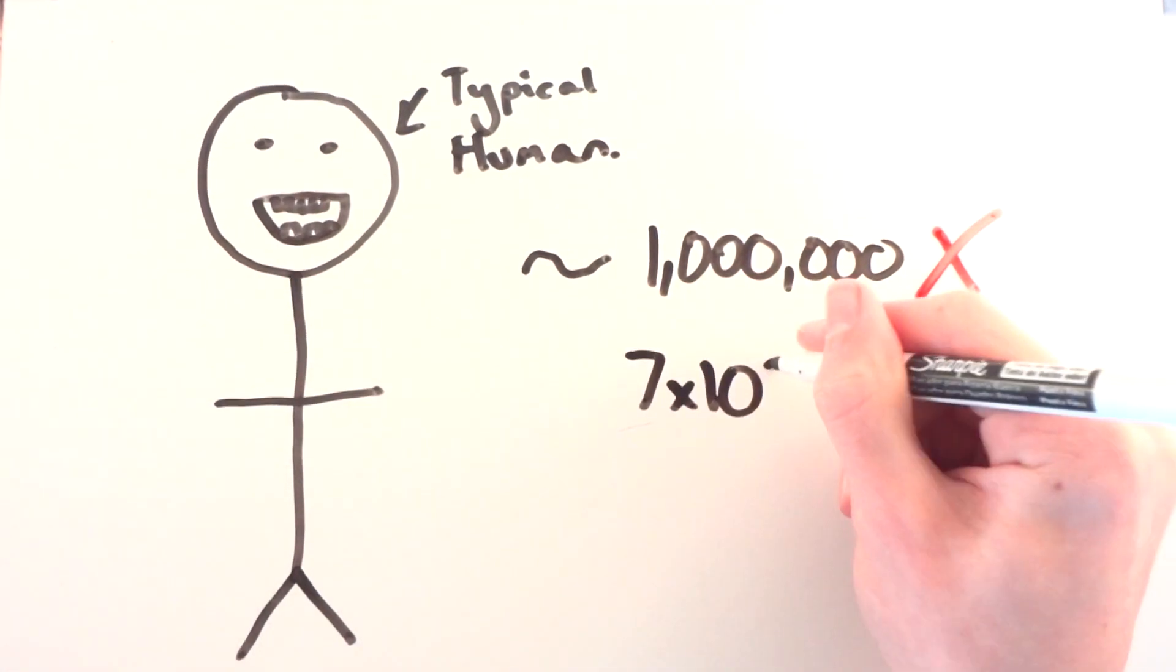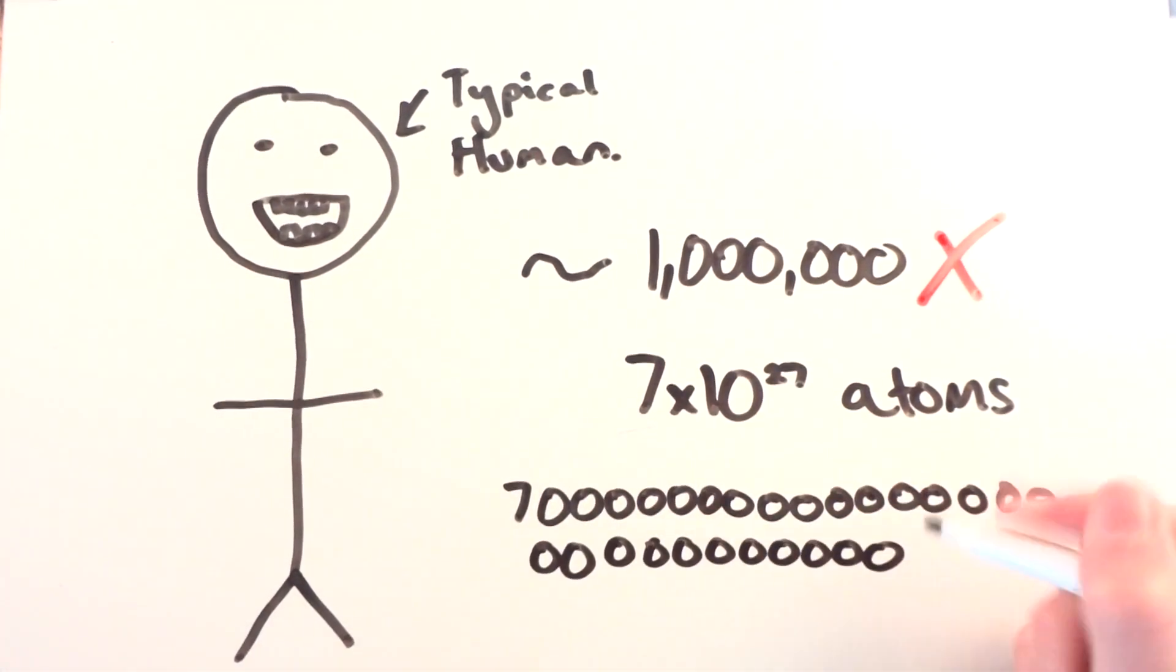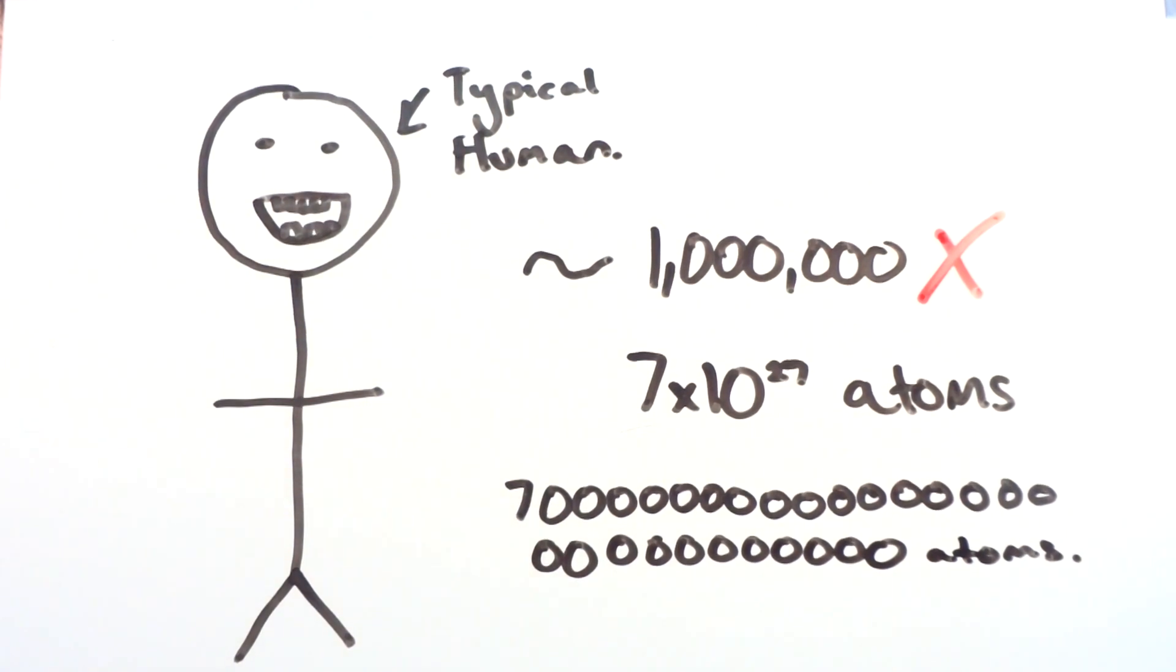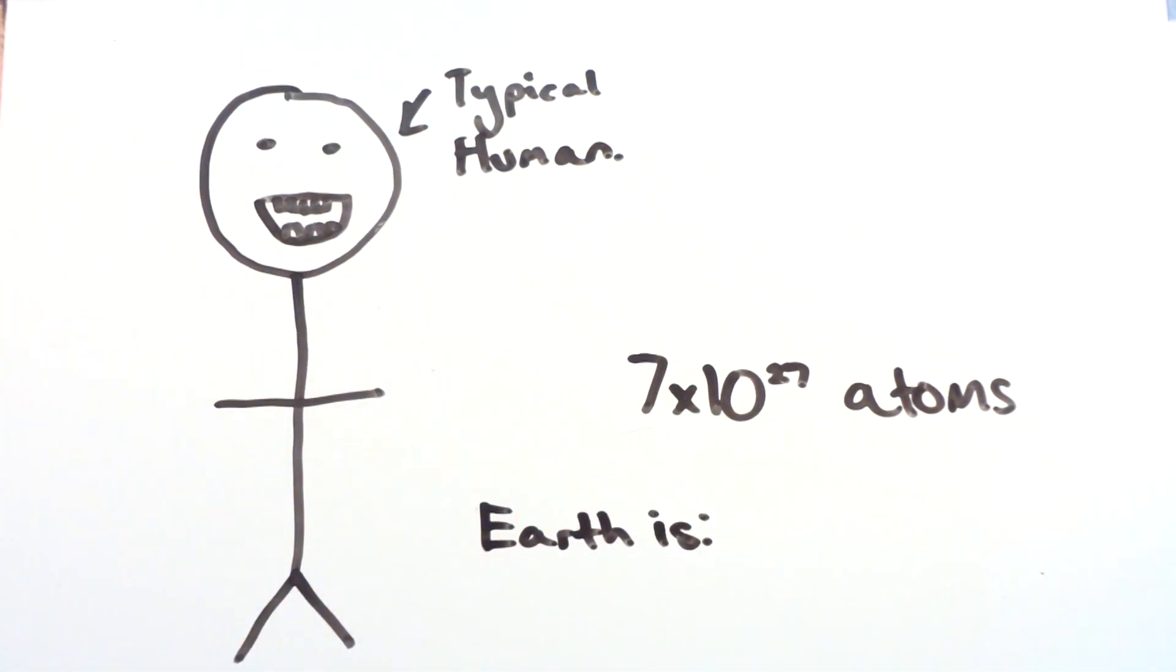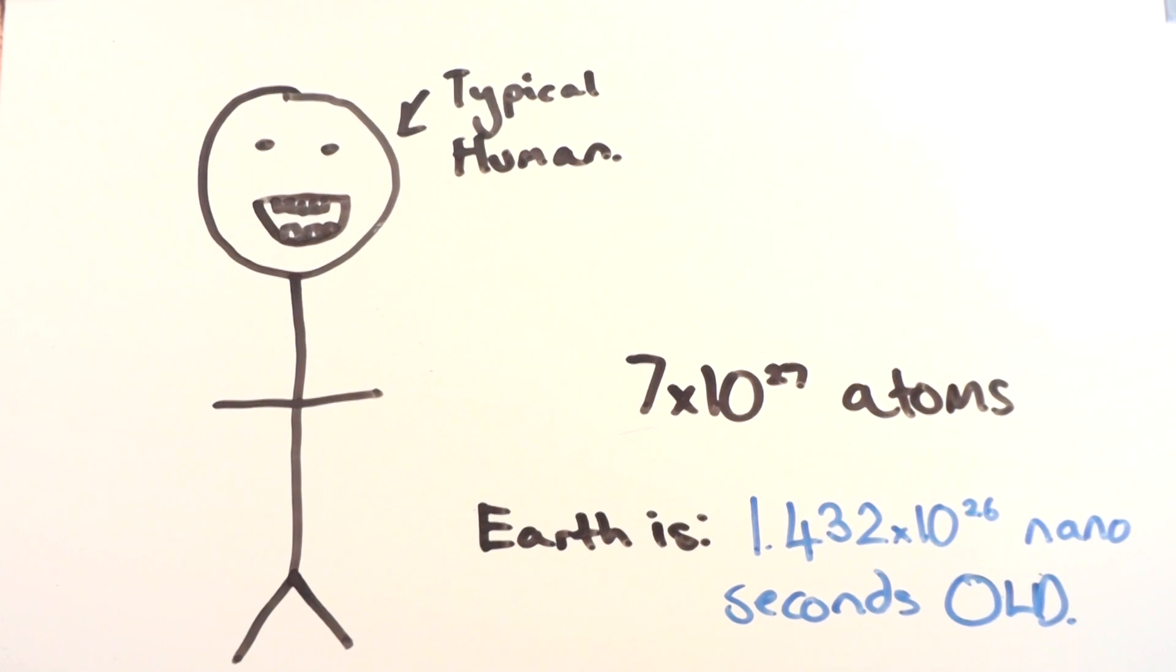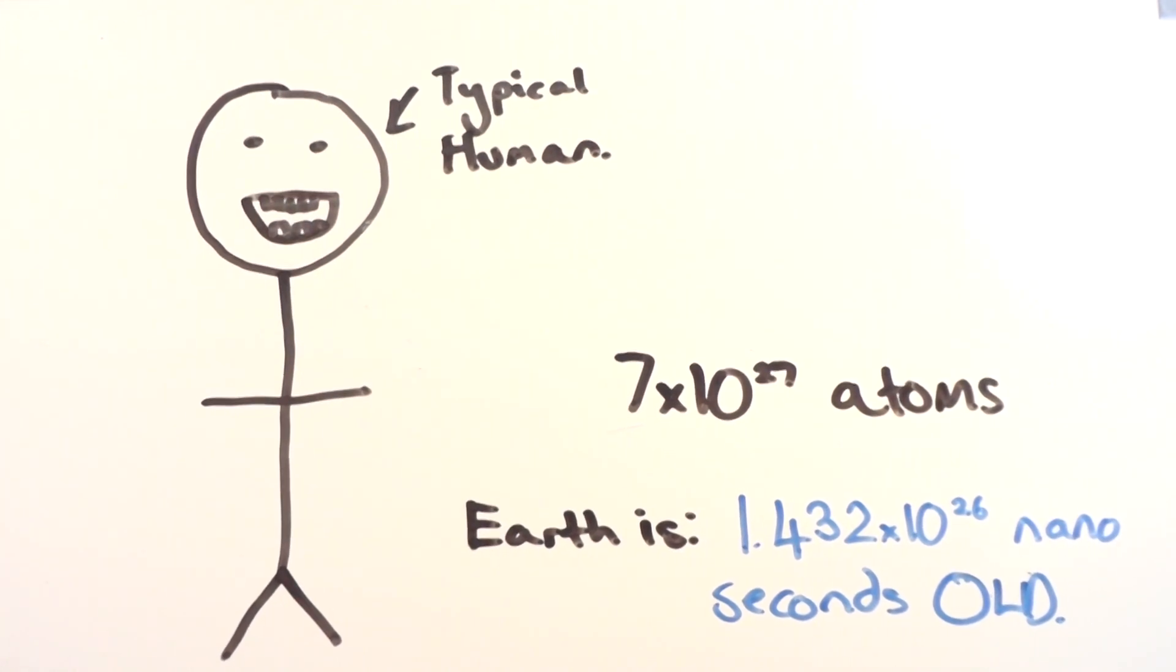You have around 7 times 10 to the power of 27 atoms in your body, which is massive. To show how large that is, Earth is around 1.432 times 10 to the power of 26 nanoseconds old. That means you have more atoms in your body than nanoseconds which Earth has been around for.